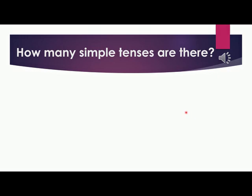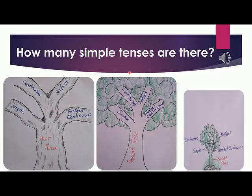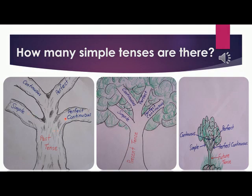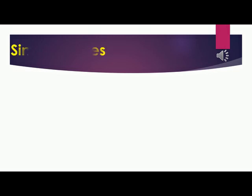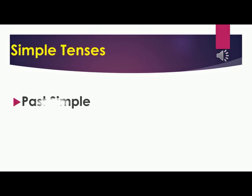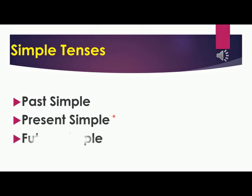Now, look at these tense trees again. This time, we just count the number of simple branches from the whole trees. How many simple branches can we find altogether? We find three simple branches. The first was past simple, second present simple, and third future simple.